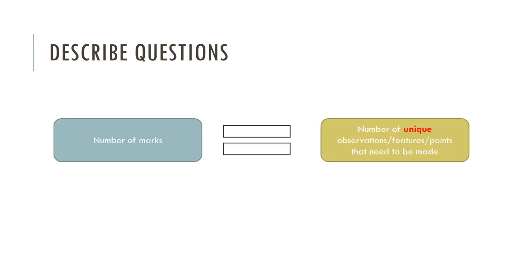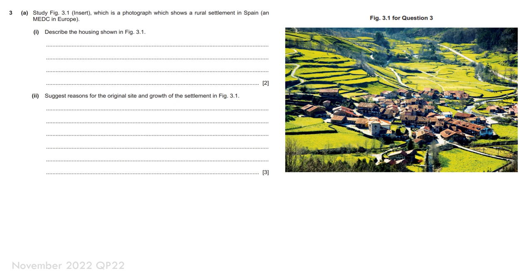The vast majority of all photograph interpretation questions are describe questions, which means the number of marks the question states is weighted. If it says two marks or three marks, that tells you exactly the number of unique observations, features, or points that need to be made.